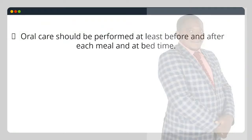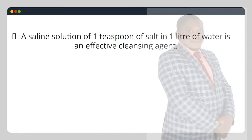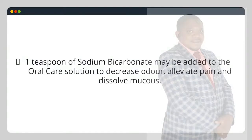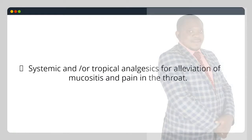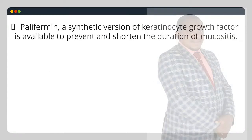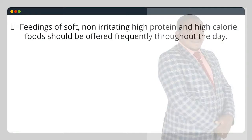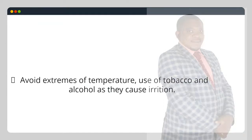Oral care should be performed at least before and after each meal and at bedtime. A saline solution of 1 teaspoon of salt in 1 liter of water is an effective cleansing agent. One teaspoon of sodium bicarbonate may be added to the oral care solution to decrease odor, alleviate pain and dissolve mucus. Systemic and/or topical analgesics for alleviation of mucositis and pain in the throat. Palifermin, a synthetic version of keratinocyte growth factor, is available to prevent and shorten the duration of mucositis. Feedings of soft, non-irritating high-protein and high-calorie foods should be offered frequently throughout the day. Avoid extremes of temperature and use of tobacco and alcohol as they cause irritation.